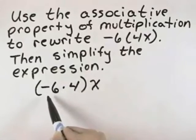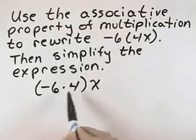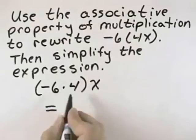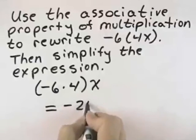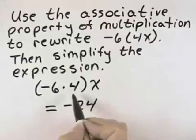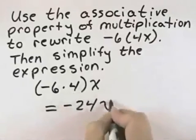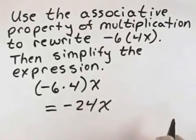We can simplify it because we can take the product of negative 6 times 4, because negative 6 times 4 is negative 24. And so now we have negative 24 times x. So written in simplified form, we have negative 24x.